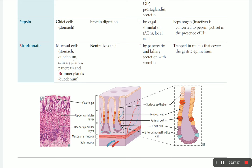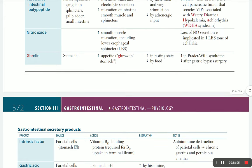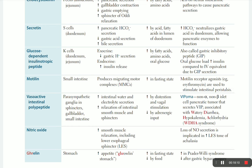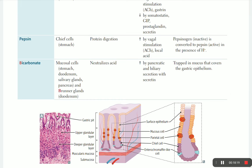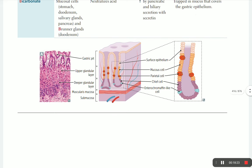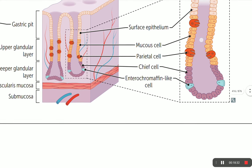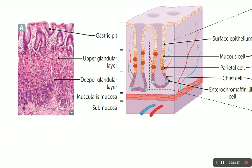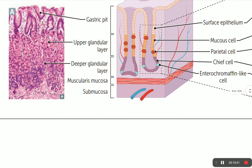Bicarbonate is secreted mainly from pancreatic cells and duodenal Brunner's glands, and also from the stomach to balance and neutralize acid. It is increased by pancreatic and biliary secretion along with secretin. Bicarbonate is trapped in the mucus that covers the gastric epithelium. Looking at the gastric wall layers, we can see the parietal cells secreting HCL alongside the deeper glandular gastric tissue - including the mucosa, submucosa, muscularis, and serosa layers - all supplied by the mucosal blood supply.